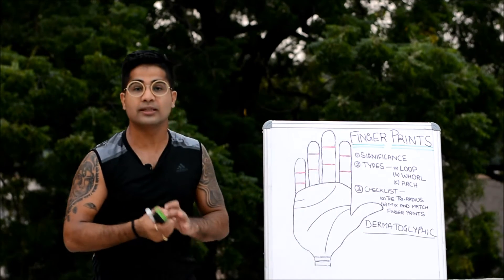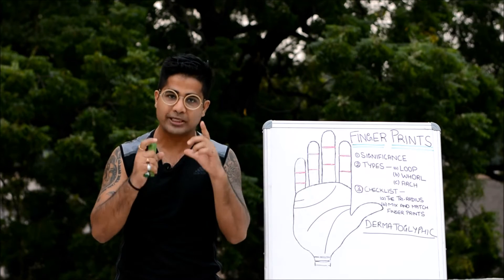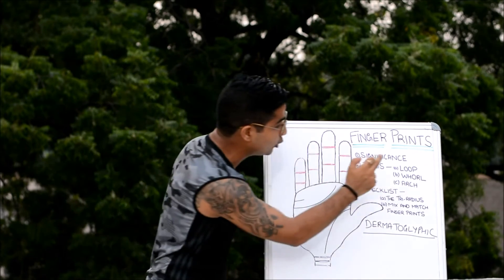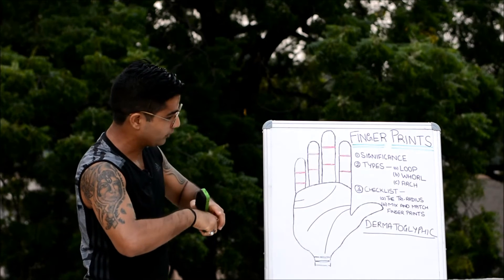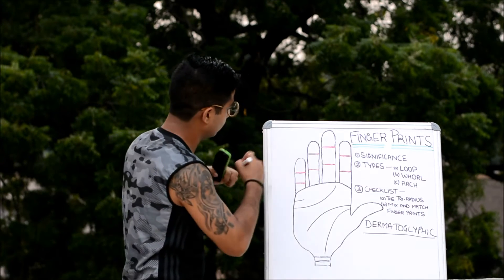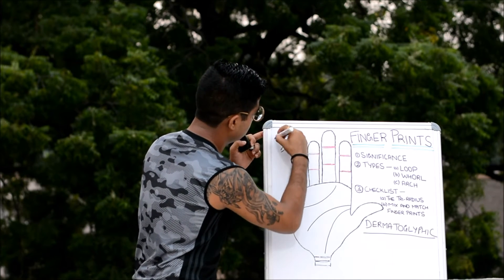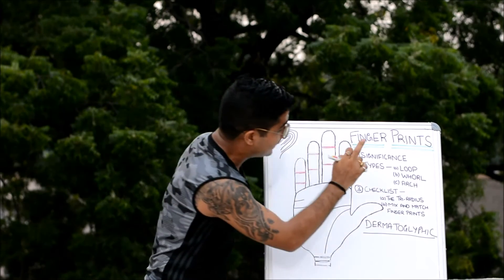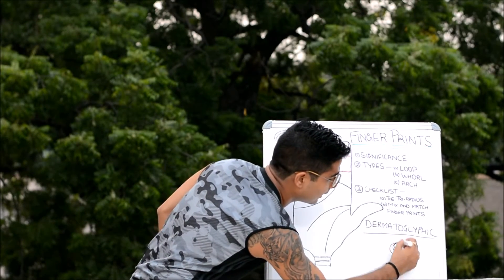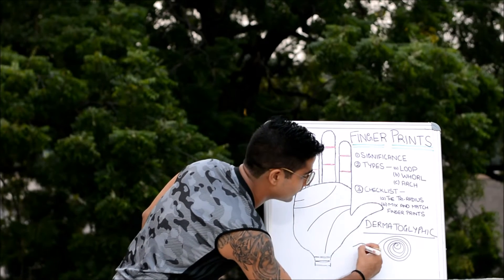Now let's look at the types. Broadly, there are three types of fingerprint patterns found in anyone's hand. The first is the loop — it forms an open flowing pattern. The second is the whorl — it forms a circular or spiraling pattern. The third is the arch — it forms a low wave-like pattern rising from one side.